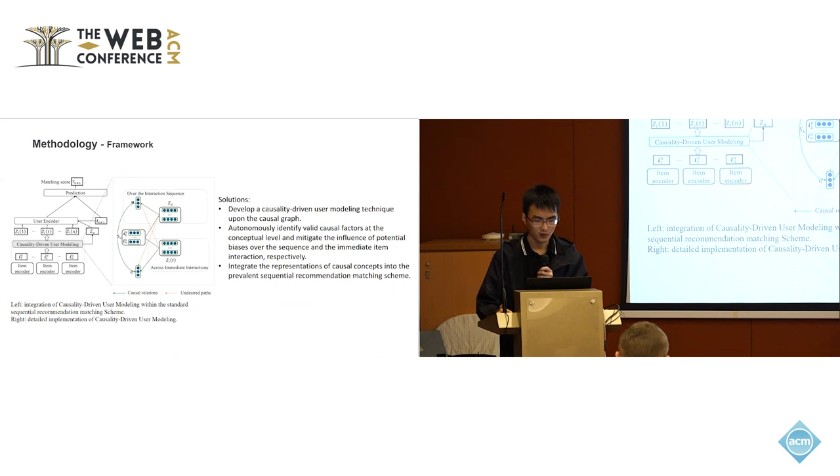Here is the framework of our methodology. We developed a causality-driven user modeling technique. Based on our proposed causal graph, we autonomously identify or without relying on any predefined features, and mitigate the influence of potential bias. Such operations are performed over the sequence and immediate item interaction respectively. Eventually, our learned representation of such causal concepts can be integrated into any mainstream sequential recommendation matching model to enhance the accuracy and robustness.